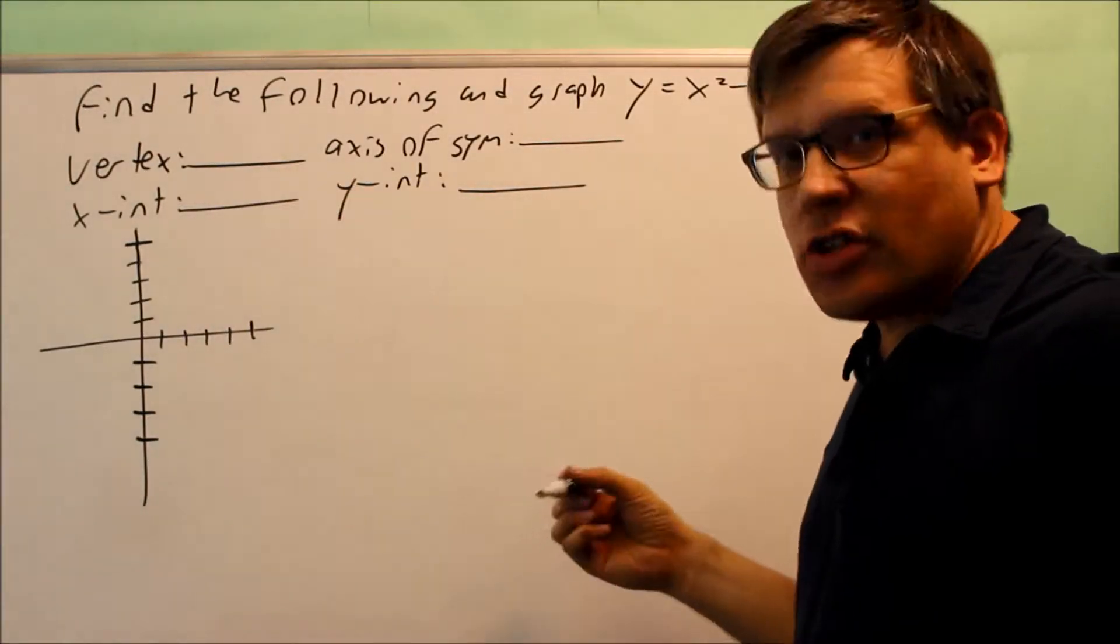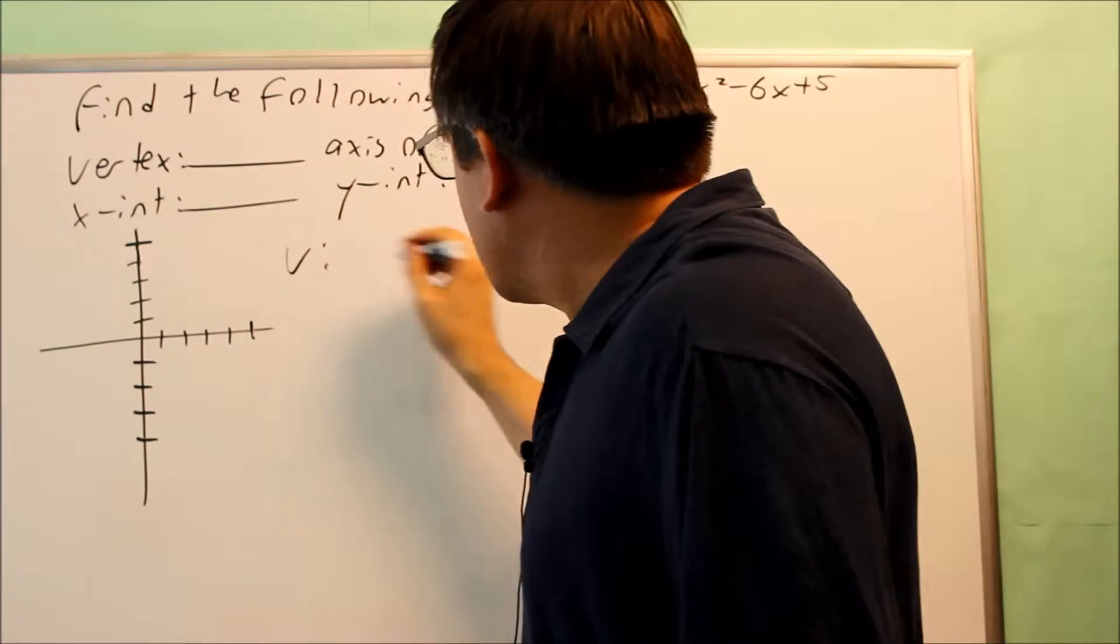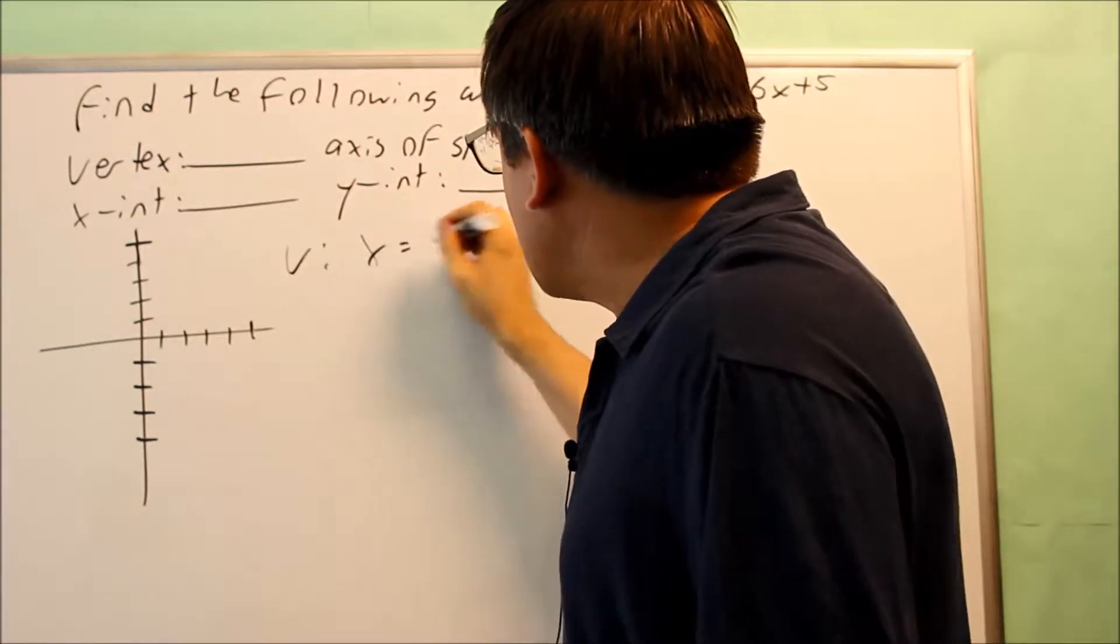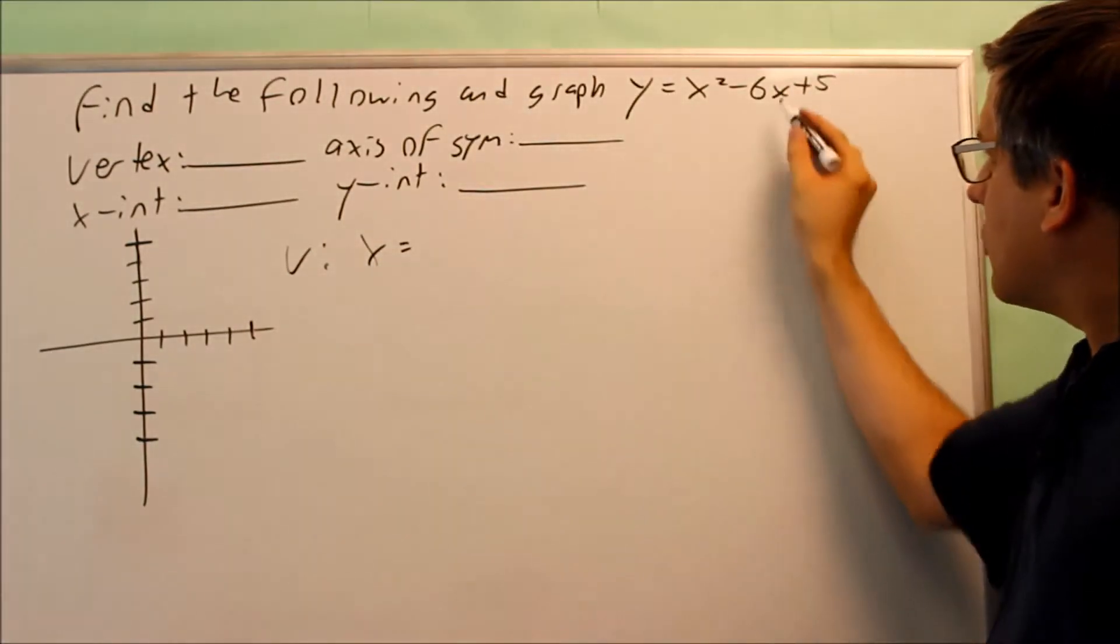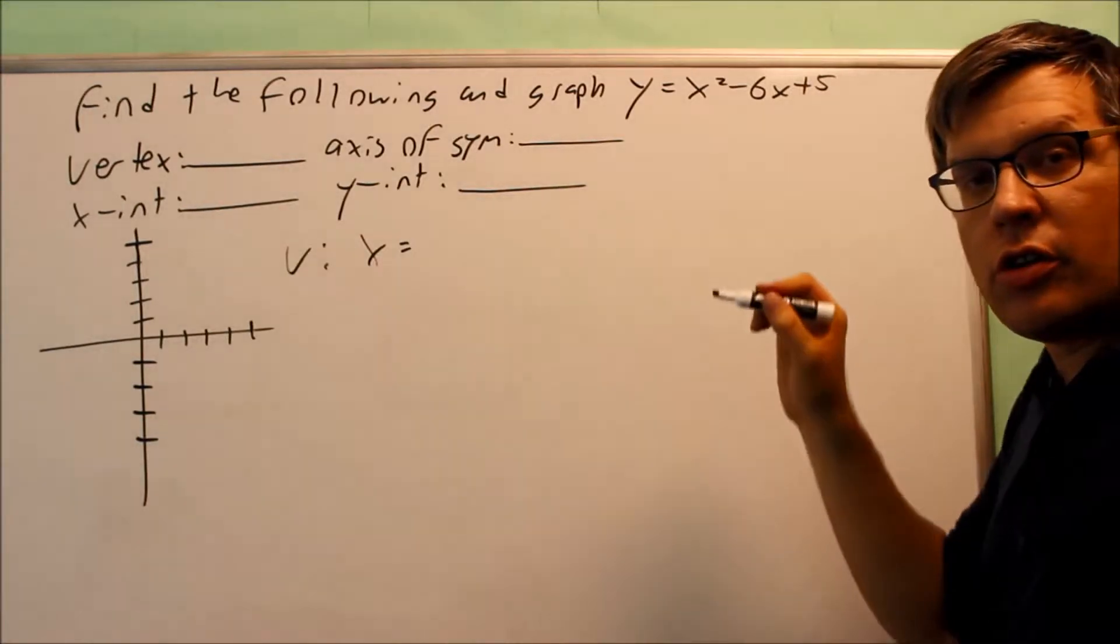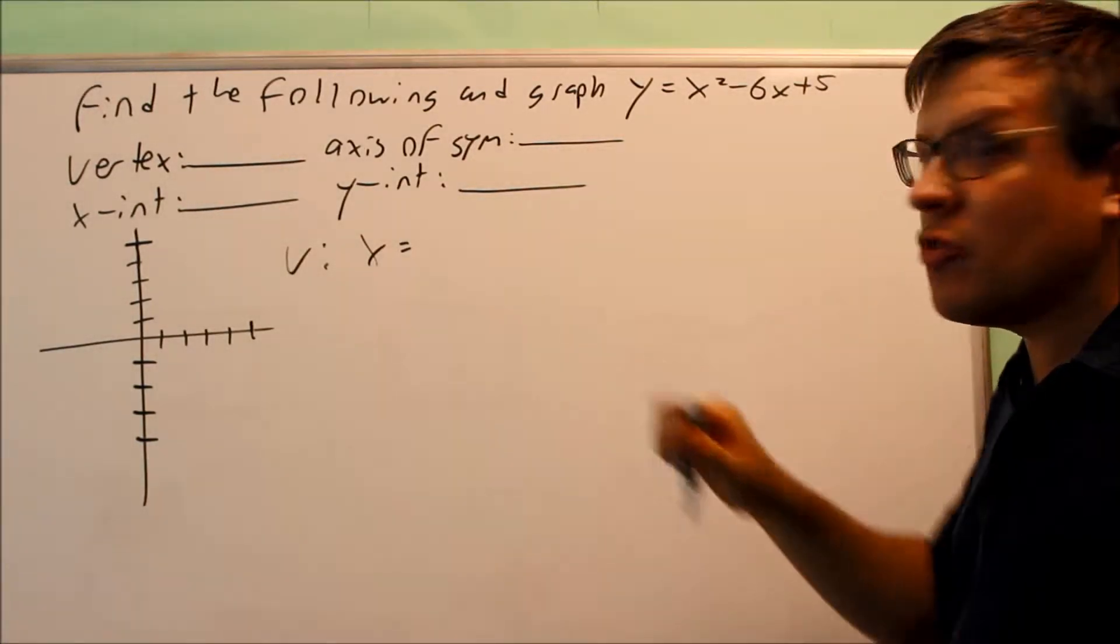Okay, so the first thing is we're going to find our vertex. For the vertex, we're going to use x equals negative b over 2a, since it's written out in this form. It's not written in vertex form, so we're going to use negative b over 2a here.